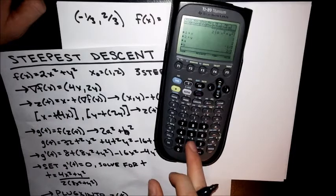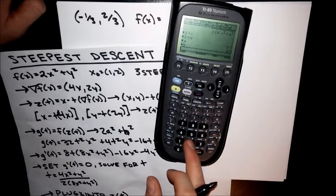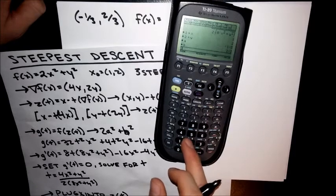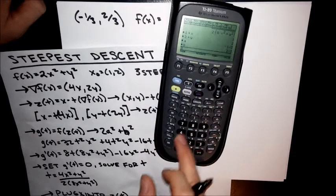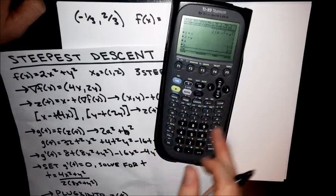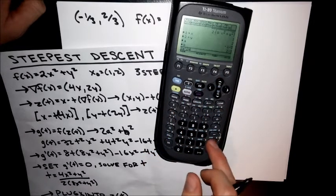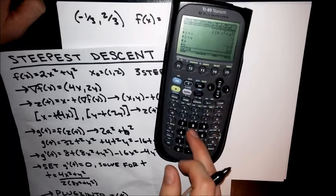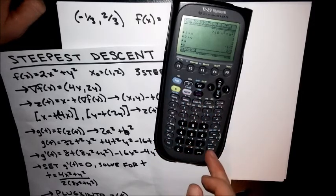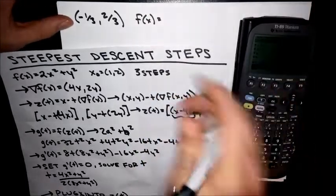But we'll just go ahead and plug that in. So now this is our A and this is our B. So 2A squared plus B squared equals 2/3.